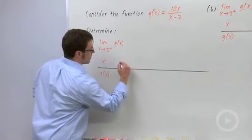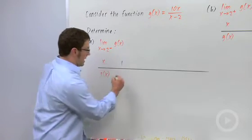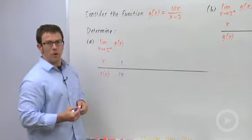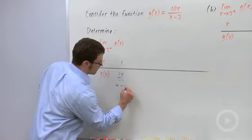Let's start with the number 1. So we have g of x equals 10 times 1, or 10, over 1 minus 2, negative 1. That's going to be negative 10.